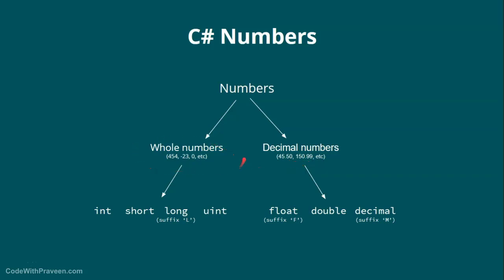Whole numbers have been divided into four different types. We can define them using int, short, long, and unsigned int, shortly referred to as uint. Similarly, for decimal numbers we can use three different types: float, double, and decimal. Note that some variables have a suffix - for example, long will have a suffix 'L' behind the values, float will have 'F', and decimal has 'M'.